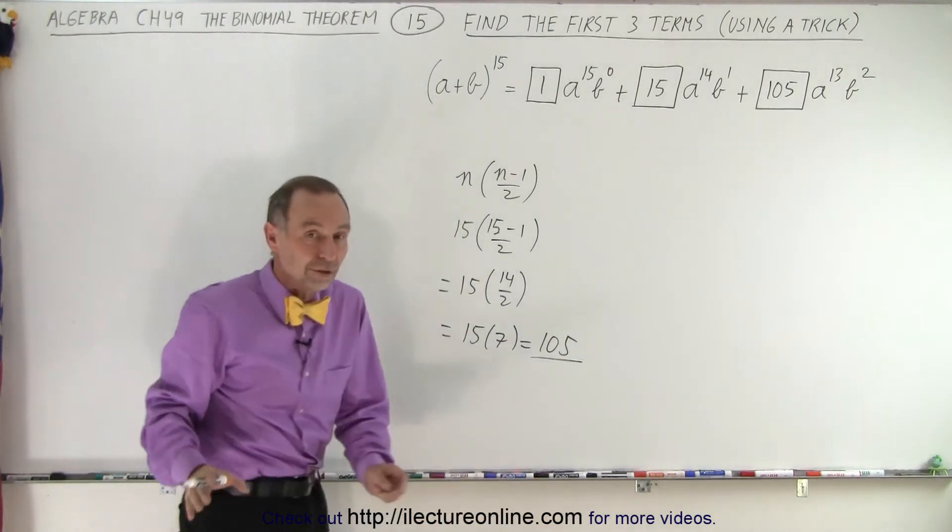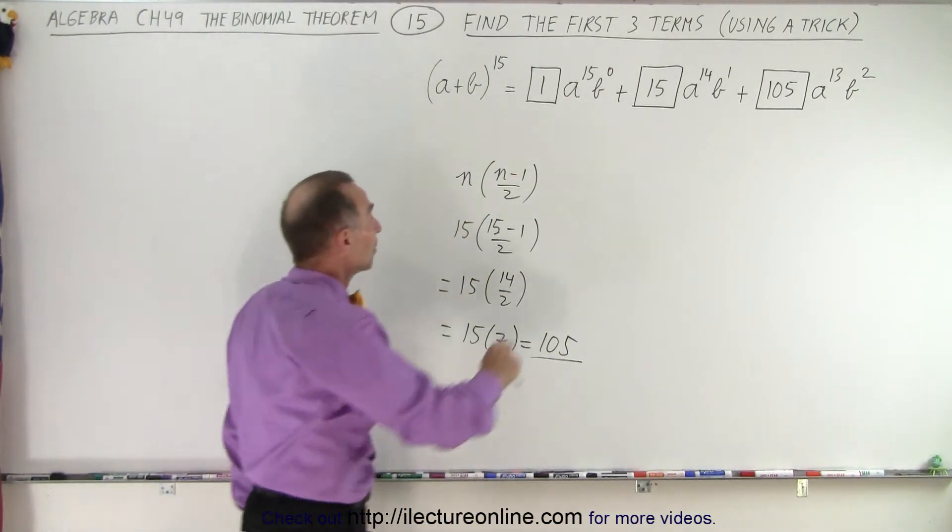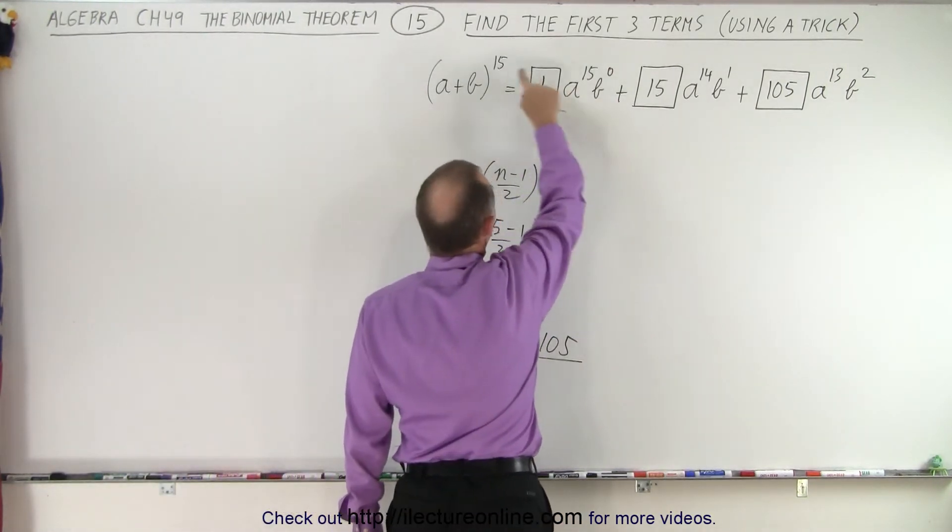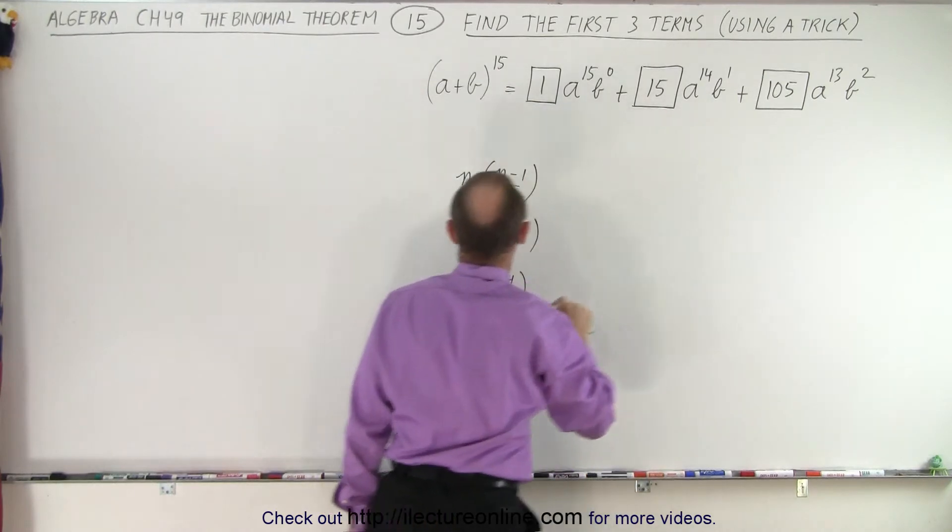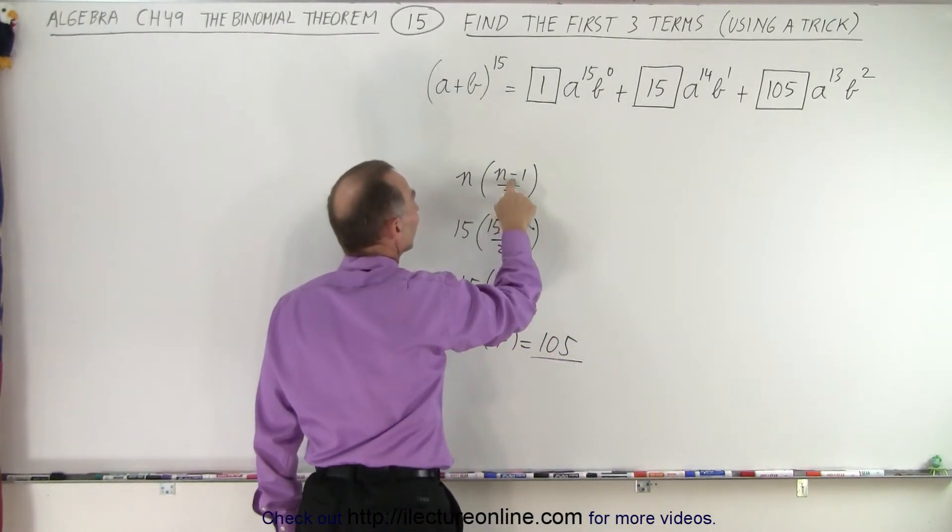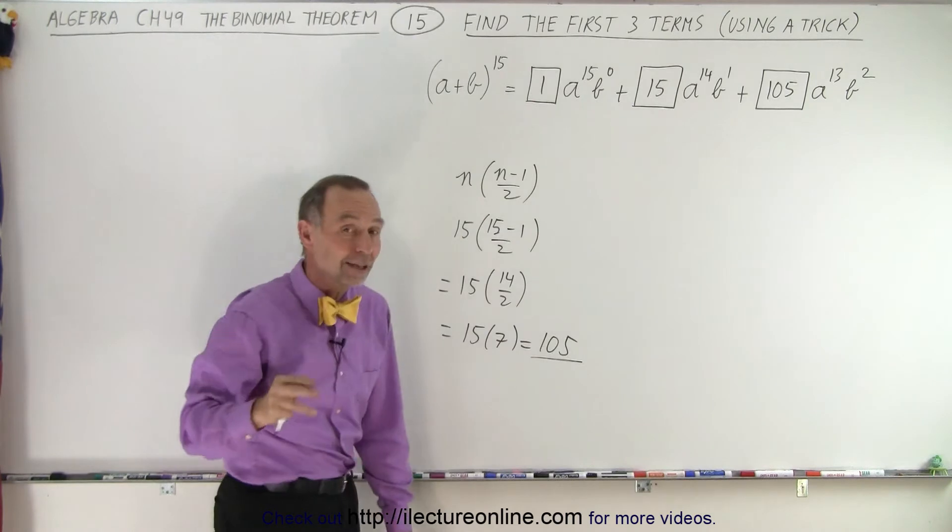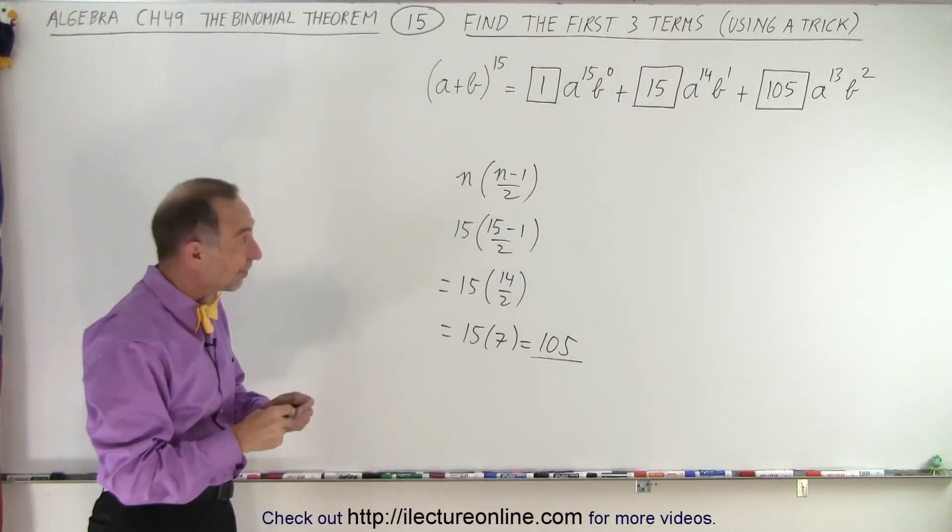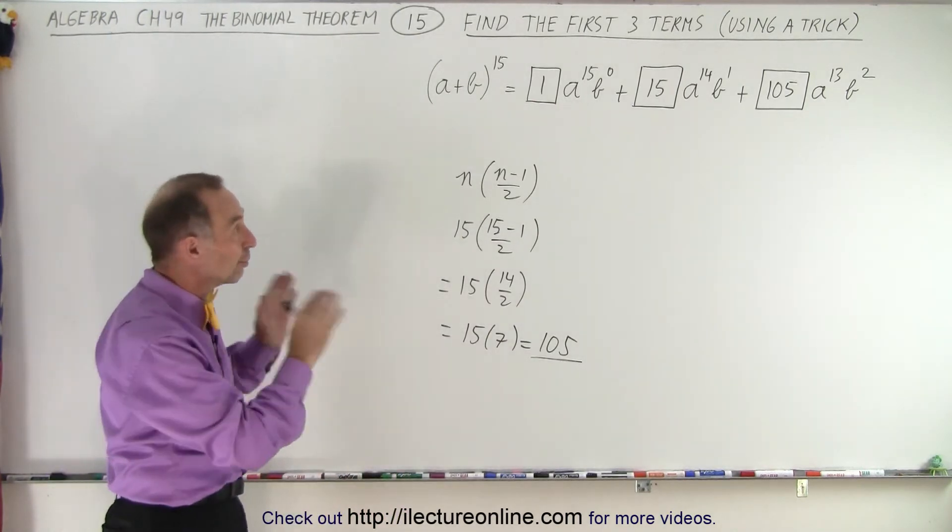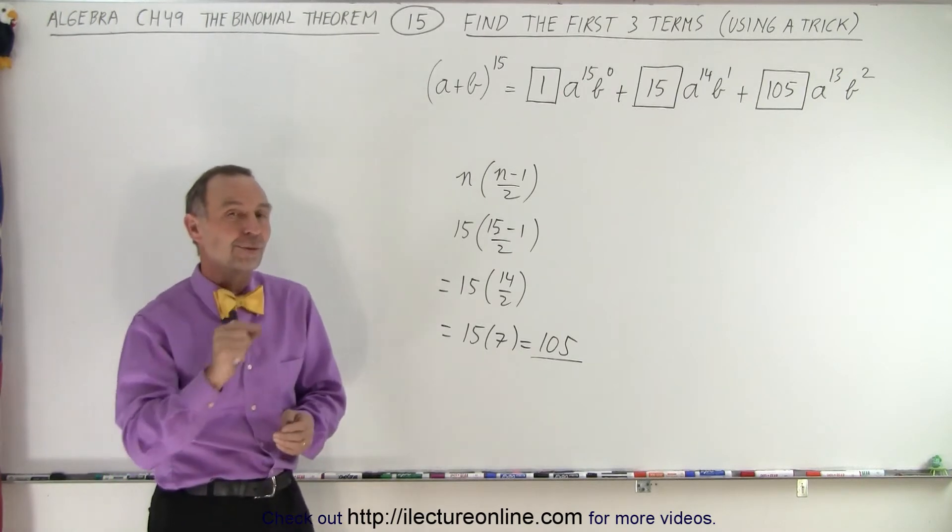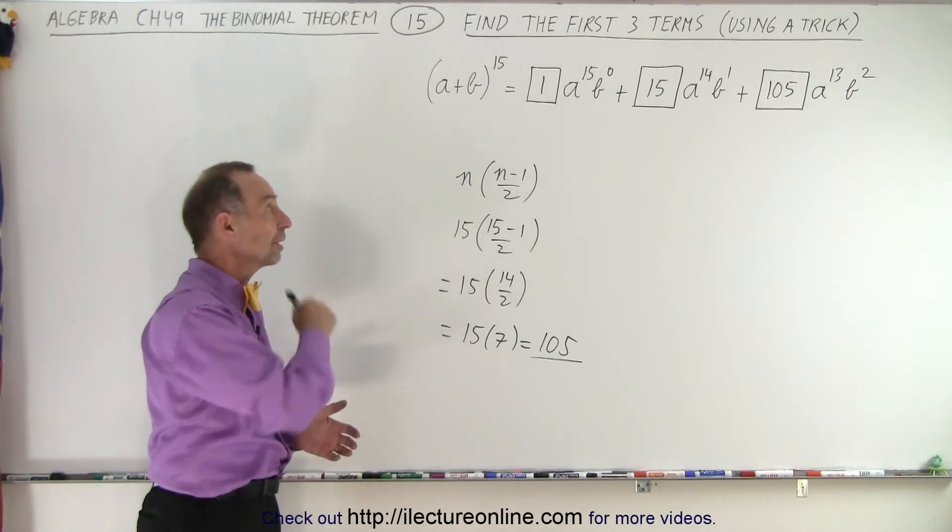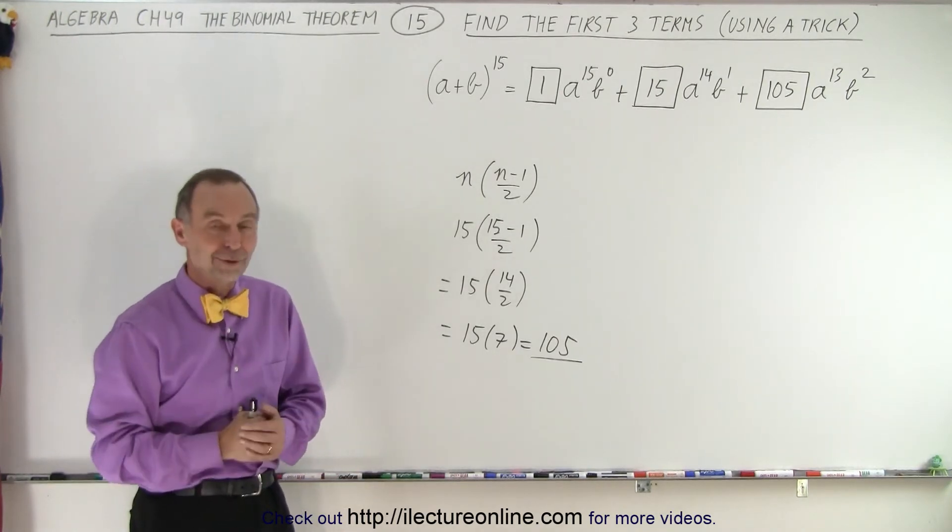So that's the trick. If you only need to find the first three, the first number is 1, the second number is equal to n, and the third number is always equal to n times n minus 1 divided by 2. In this case, 105. And so that's how you very quickly can find the numerical coefficients of the first three terms in any binomial expansion. And that is how it's done.